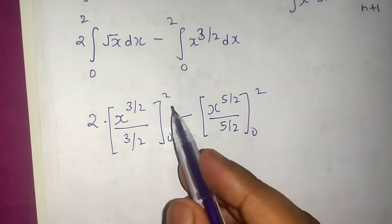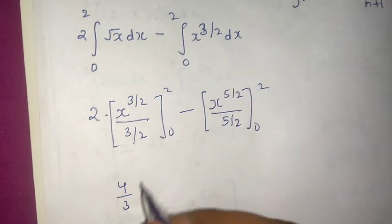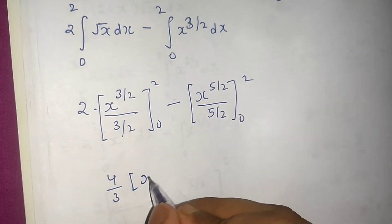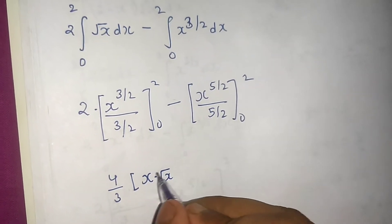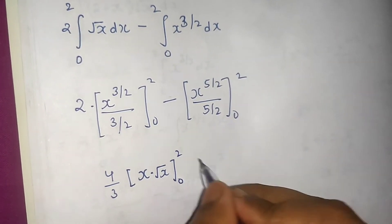Now this will go up. So 2 into 2 is 4 by 2 is 4 by 3. This is constant. Now I will be left with x power 3 by 2, which is nothing but x into root x, because x power 1 into x power half will give you x power 3 by 2 from 0 to 2.